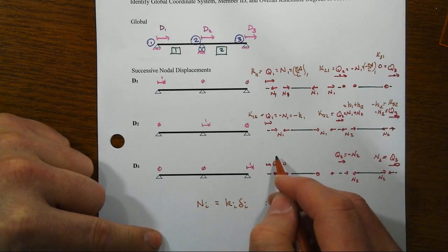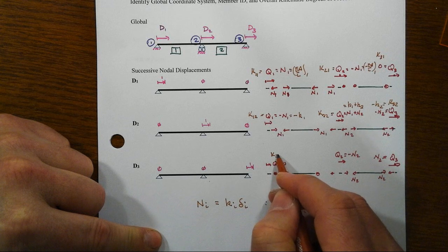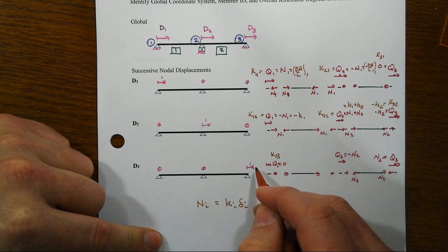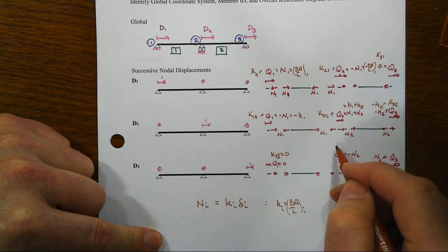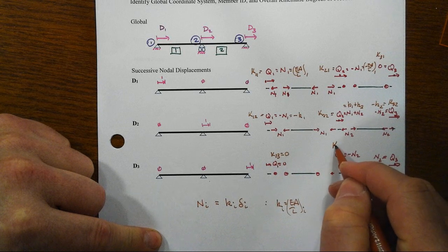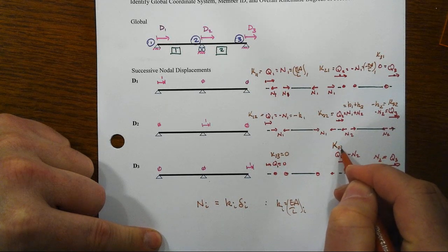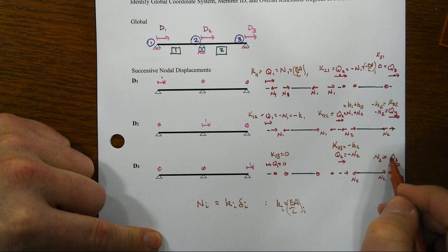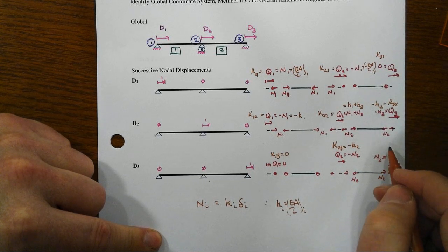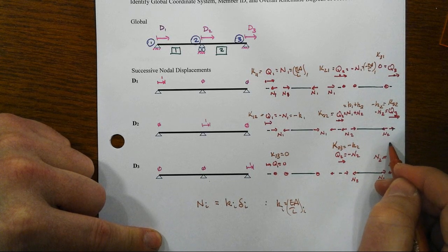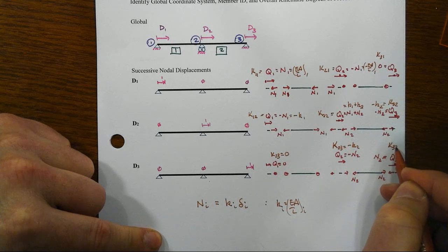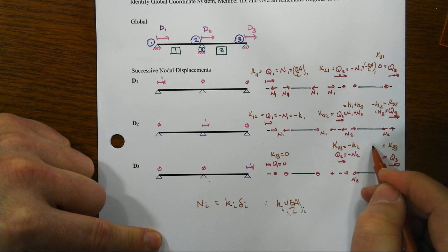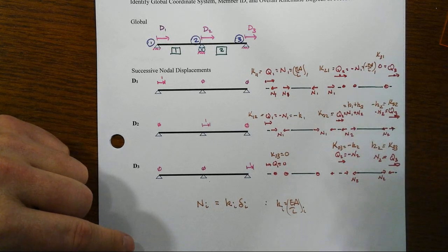And then this last one would be K at 1, displacement at 3 is equal to 0, K capital here, 23 is equal to minus K2, and then this one is going to be that K33 is equal to K2.